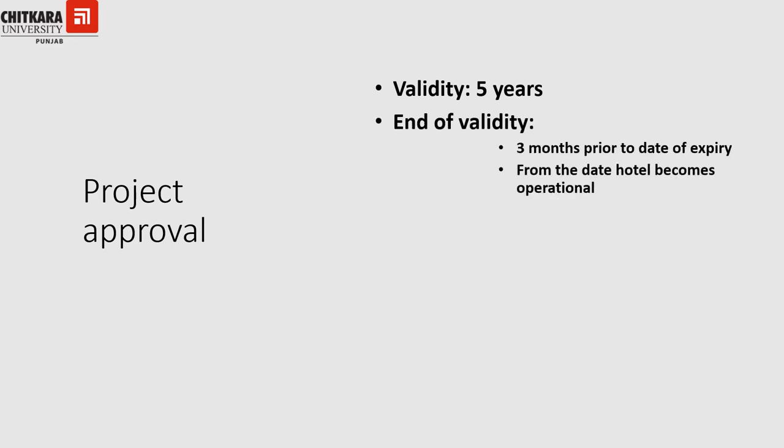Under the project approval stage, the most important point is validity. The validity of the project approval stage is five years. The validity ceases three months prior to the date of expiry, or from the date on which the hotel or part of a hotel becomes operational. The categories are one star, two star, three star, four star, and five star.